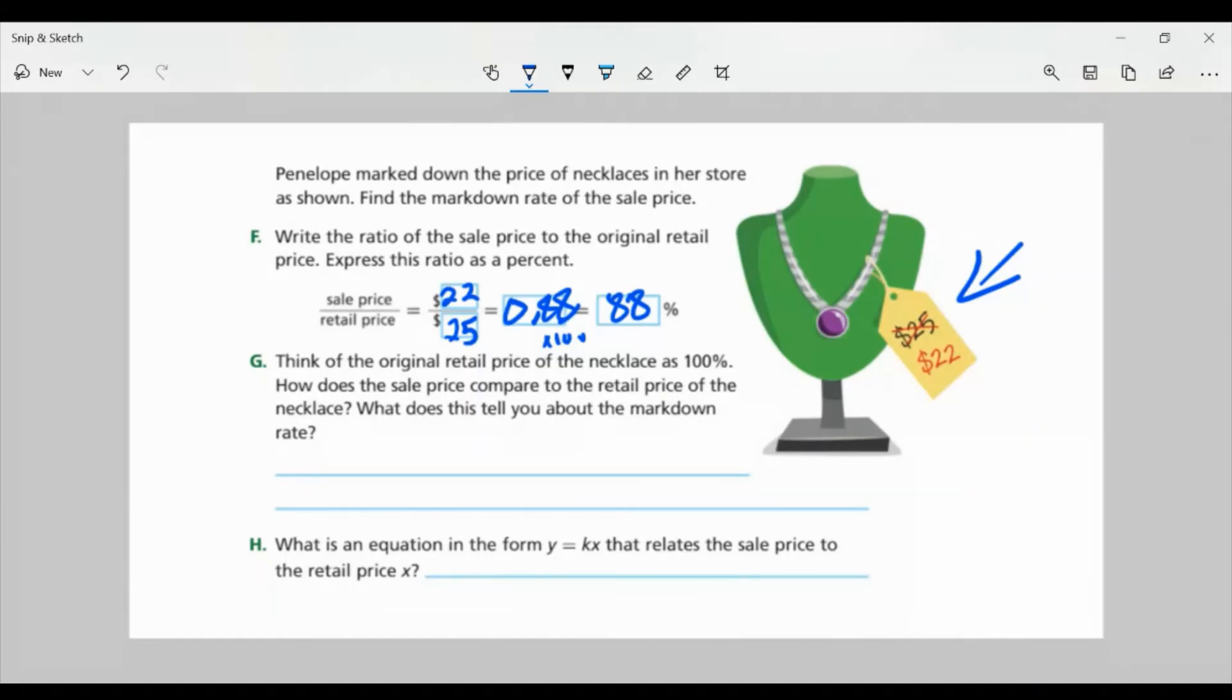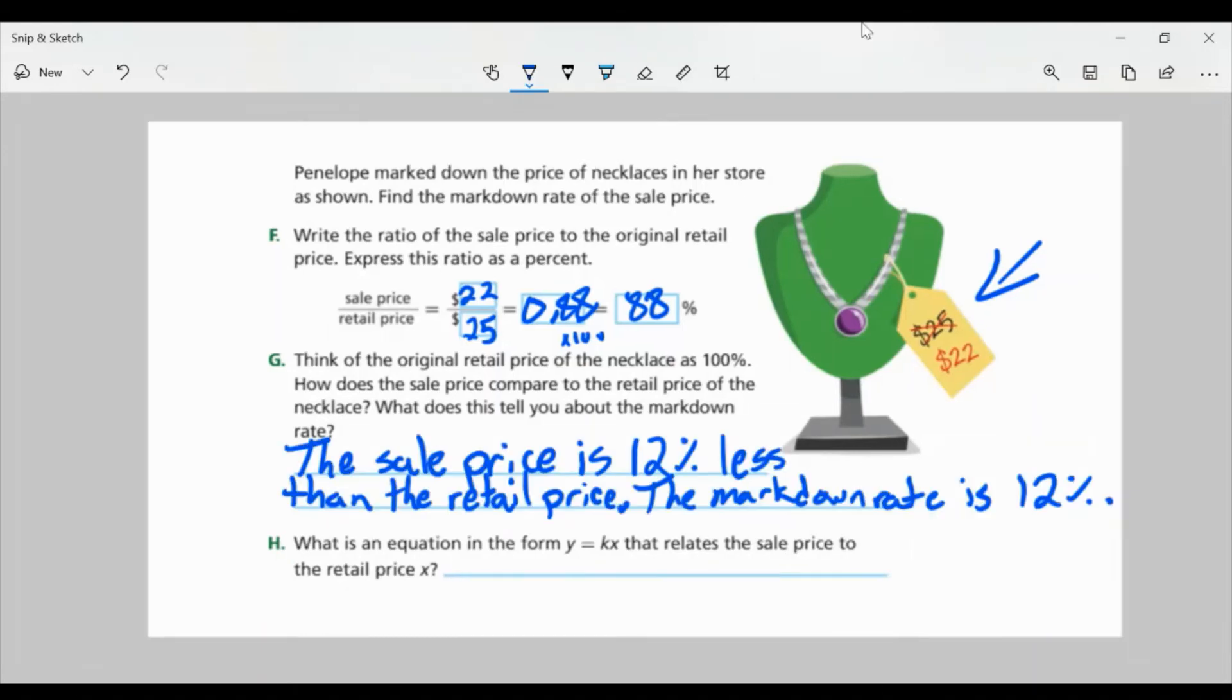So back to the problem. Part G, think of the original retail price of the necklace as 100%. How does the sale price compare to the retail price of the necklace? What does this tell you about the markdown rate? The way to think about it is a hundred percent is the retail price. And if we subtract the 88%, we know it's 12% less. The sale price is 12% less than the retail price. So that means the markdown rate is 12%.